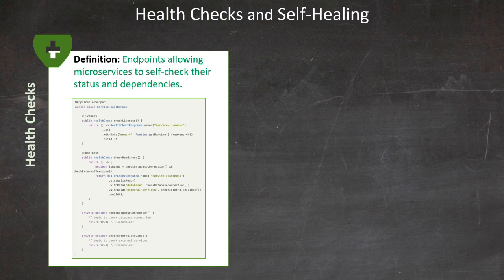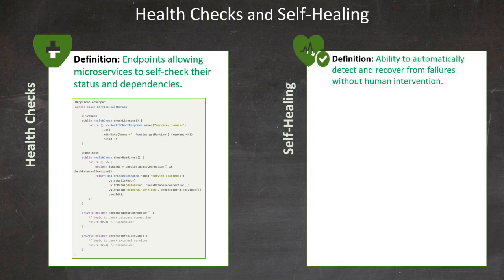Let's talk about how these health checks tie into self-healing. When a service fails a health check, automated self-healing mechanisms can be triggered. These might include restarting the failing service, rerouting traffic away from unhealthy instances, or spinning up new instances to replace failing ones. For example, if we integrate these health checks with Kubernetes, we can use LIVENESS probes to automatically restart pods that fail health checks, and READINESS probes to ensure traffic is only routed to healthy instances.